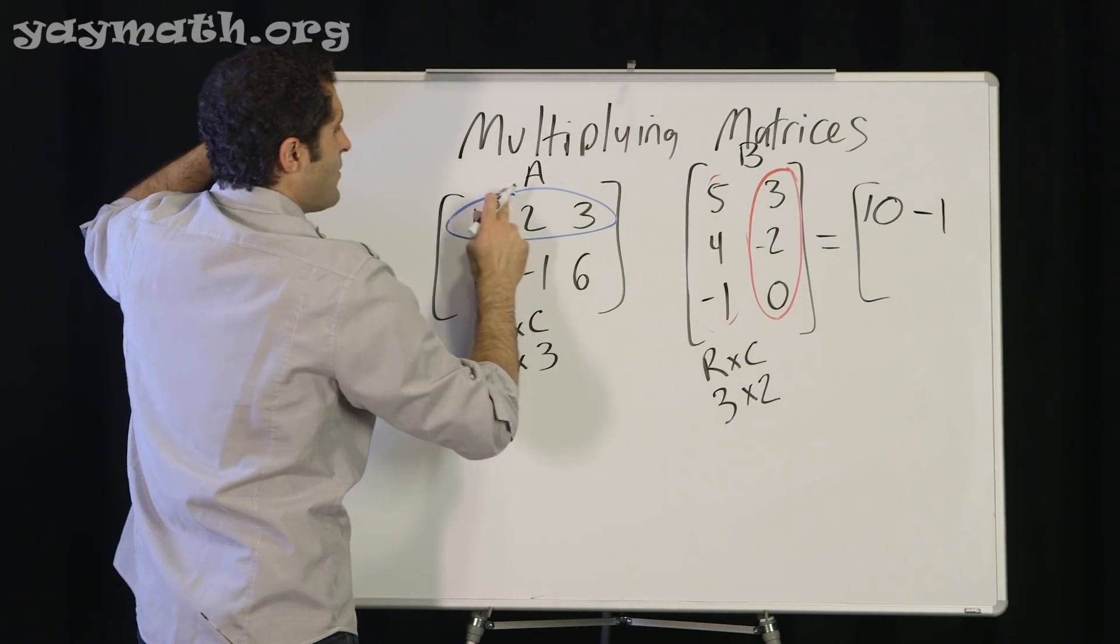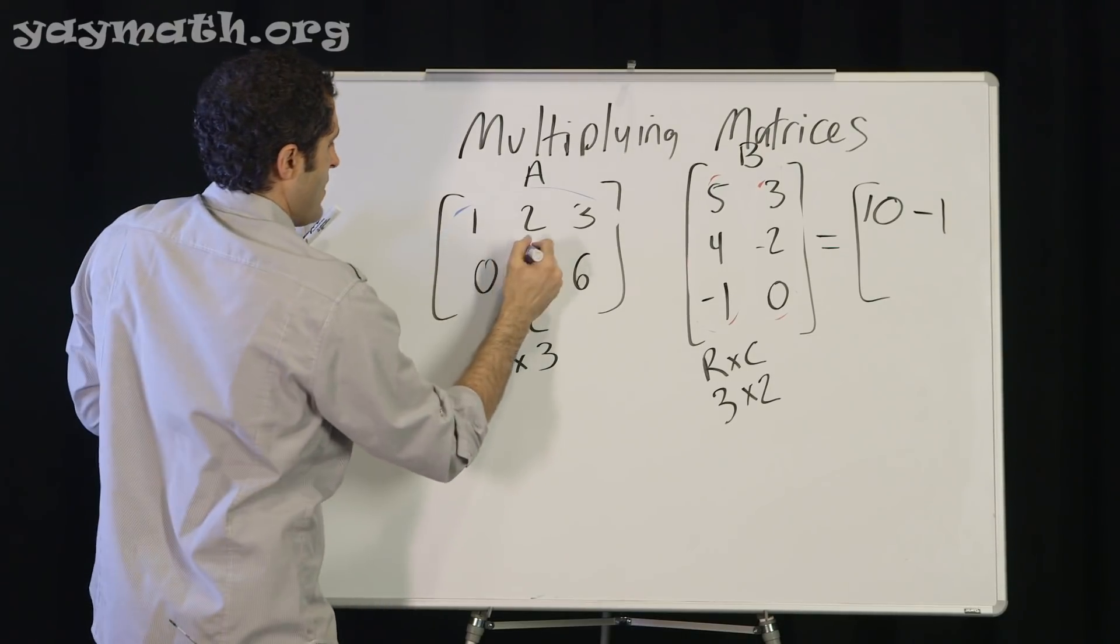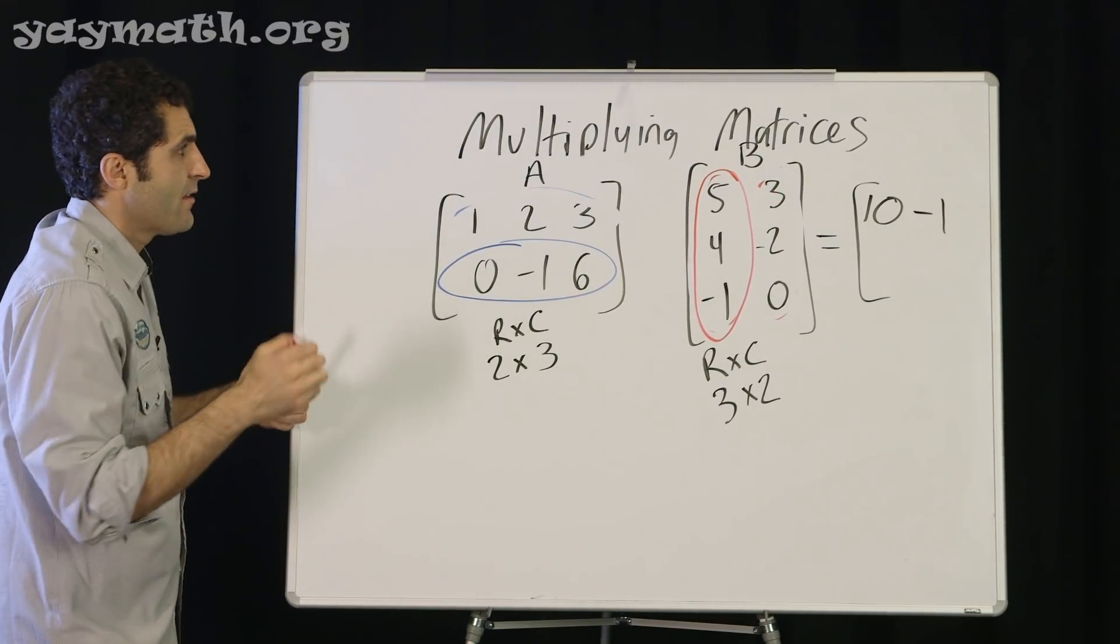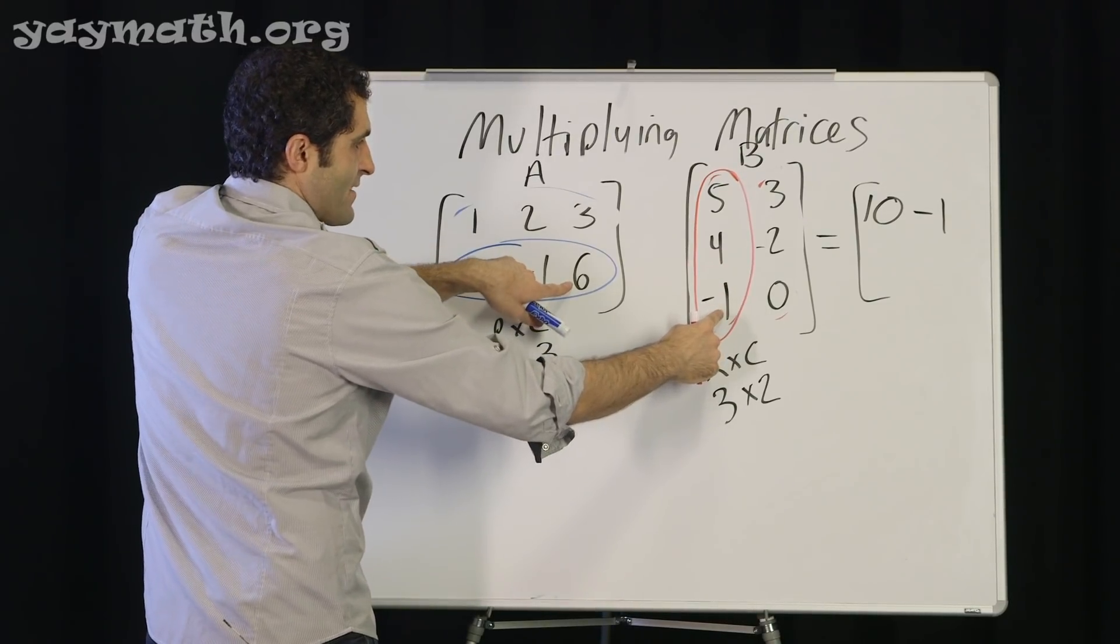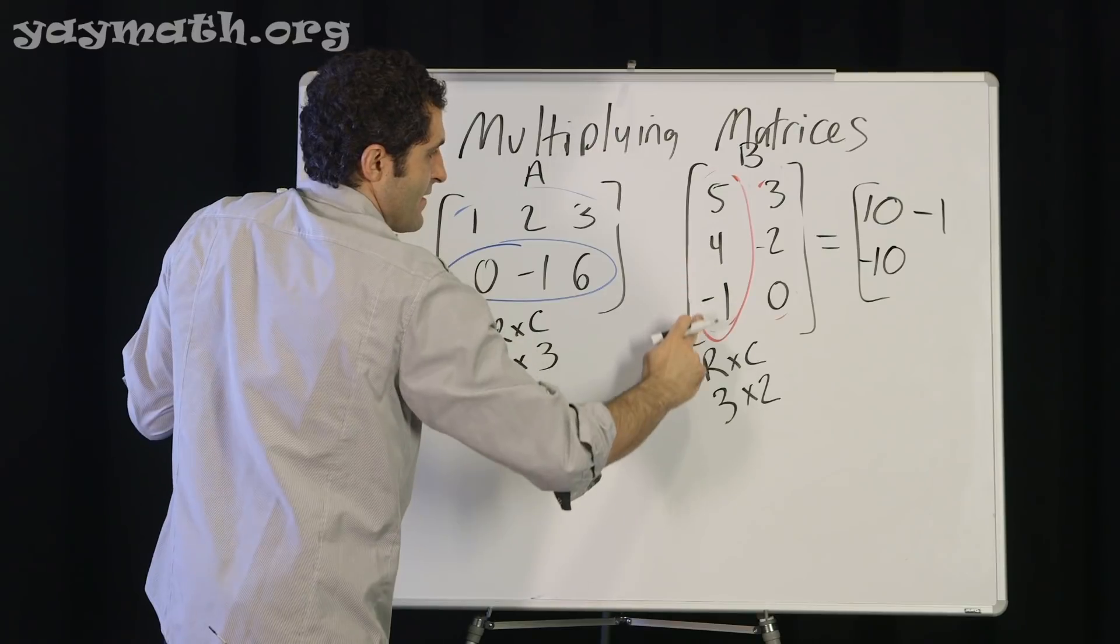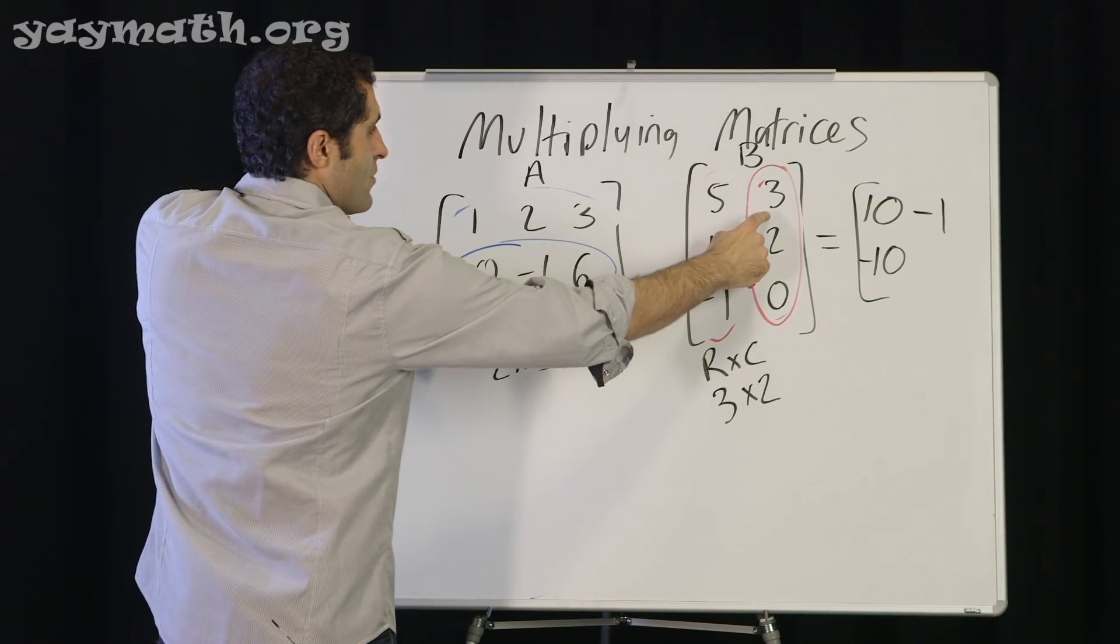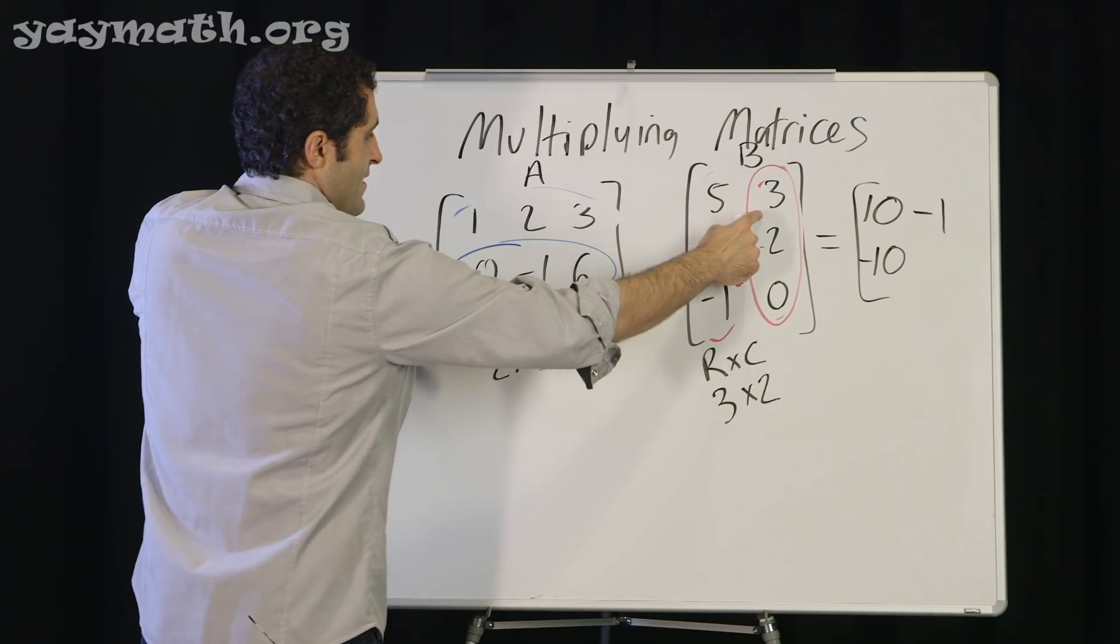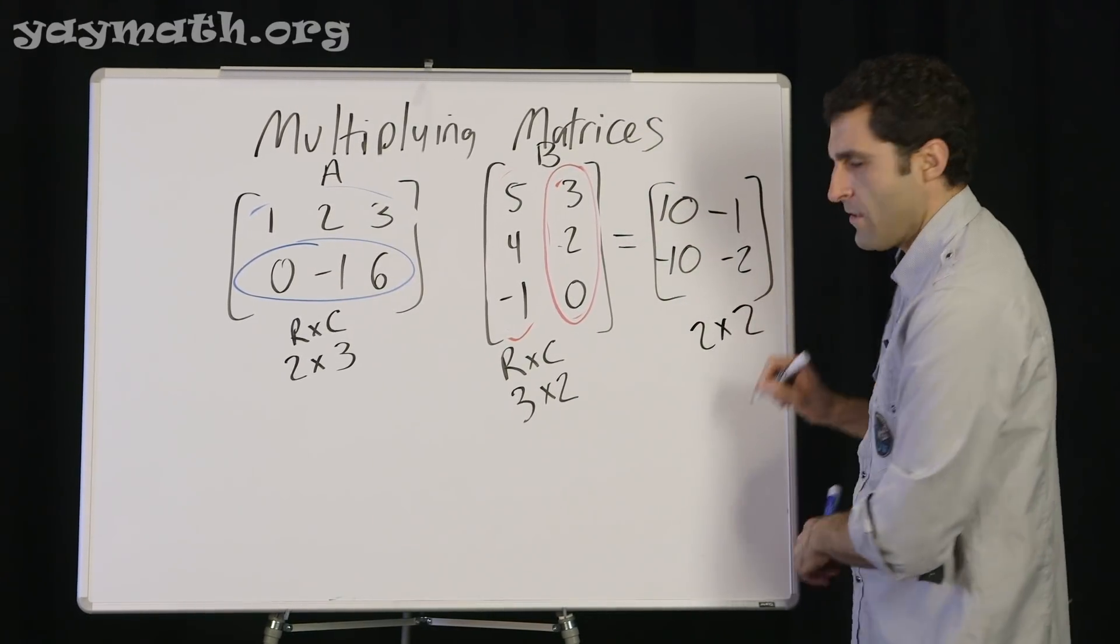We've exhausted every column, so we can go to the next row and start over. Just like a typewriter. 0 plus negative 4 is negative 4, plus negative 6 is negative 10. And then we've got to exhaust the next column. 0 plus negative 2 plus 0. Notice I'm progressing simultaneously. That's negative 2.